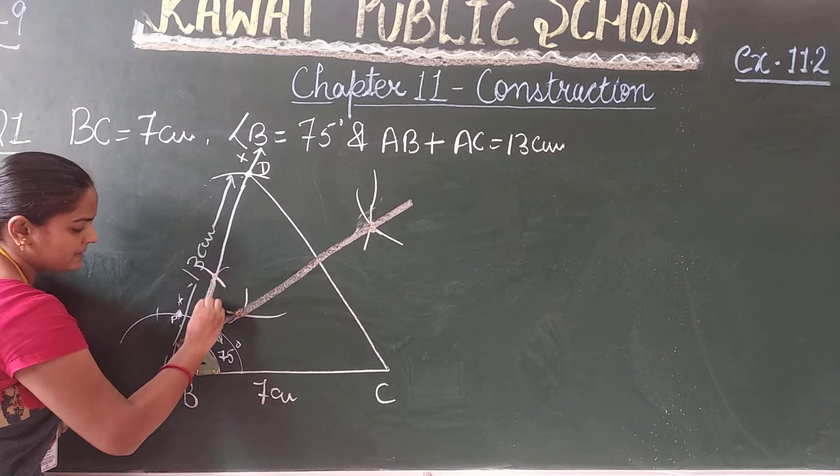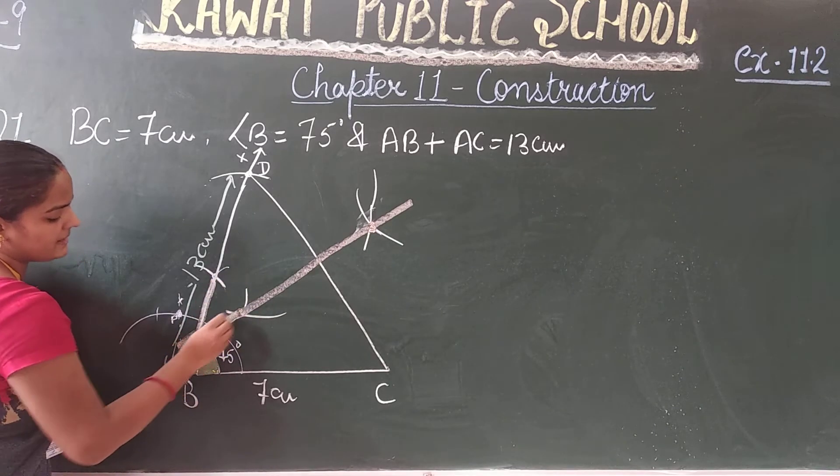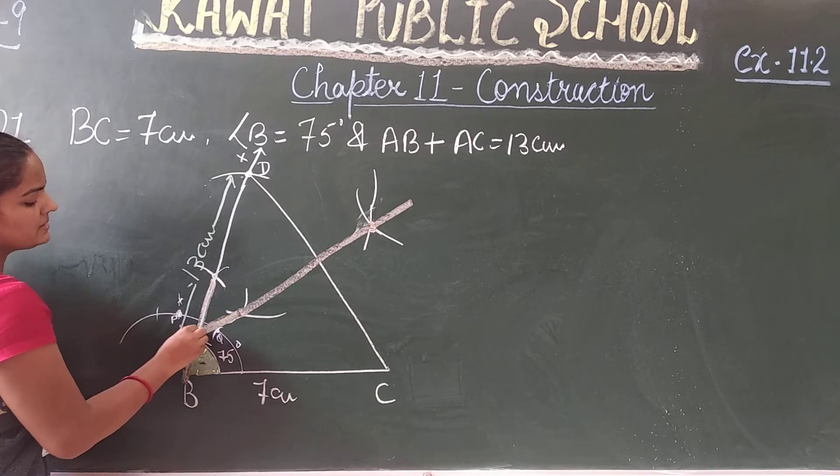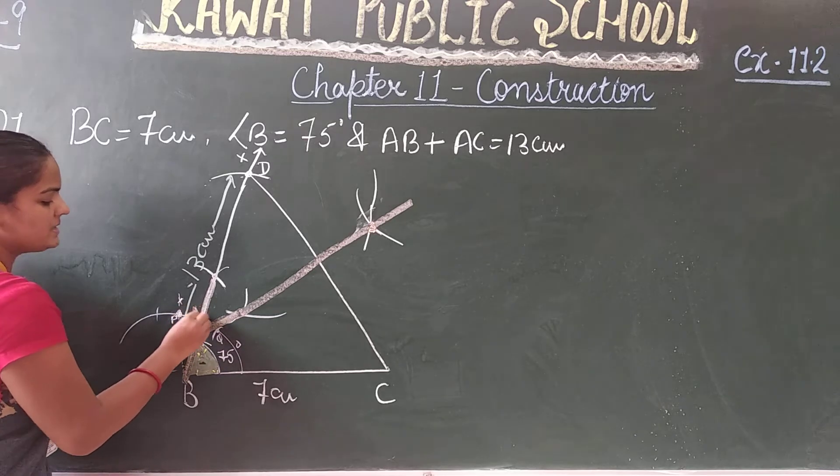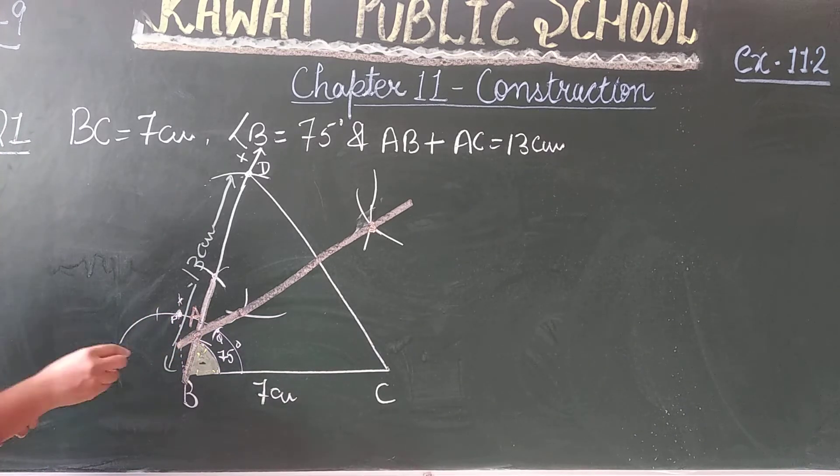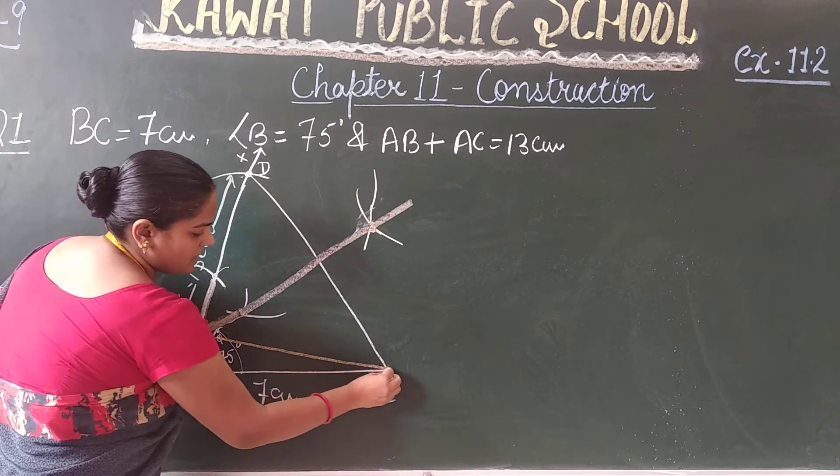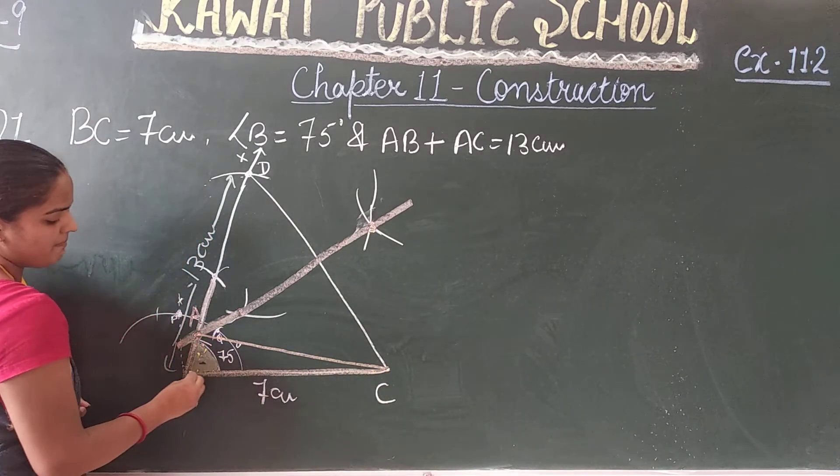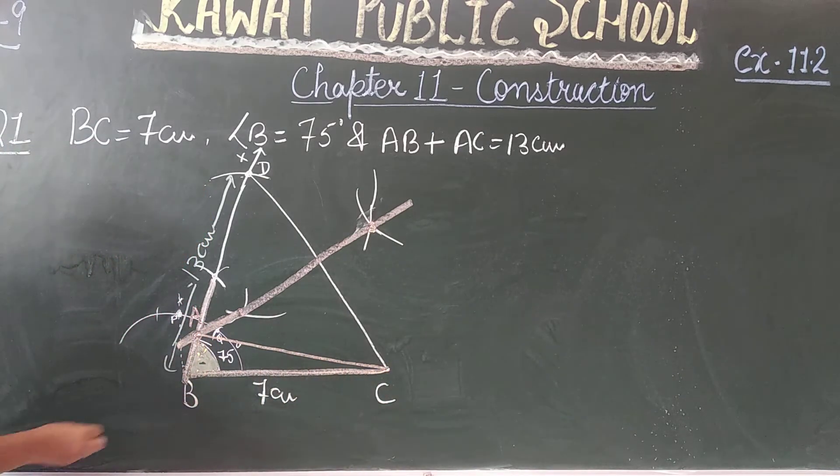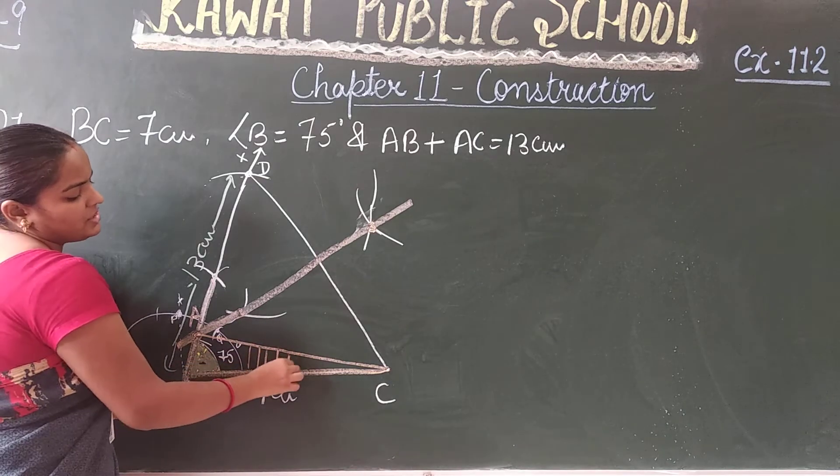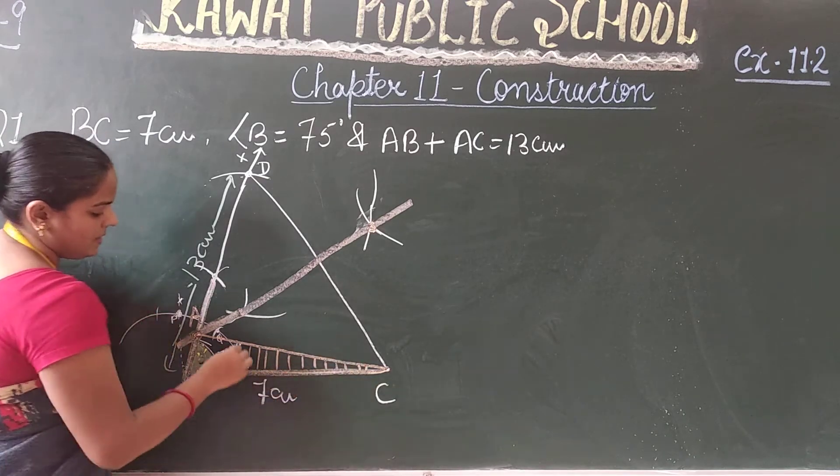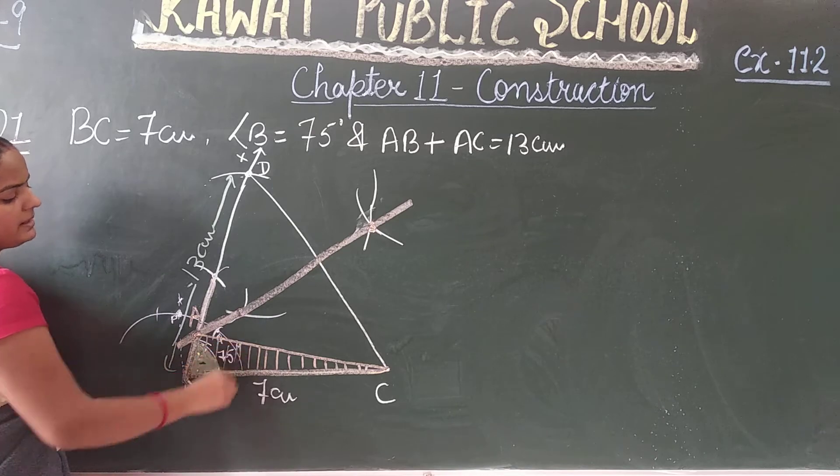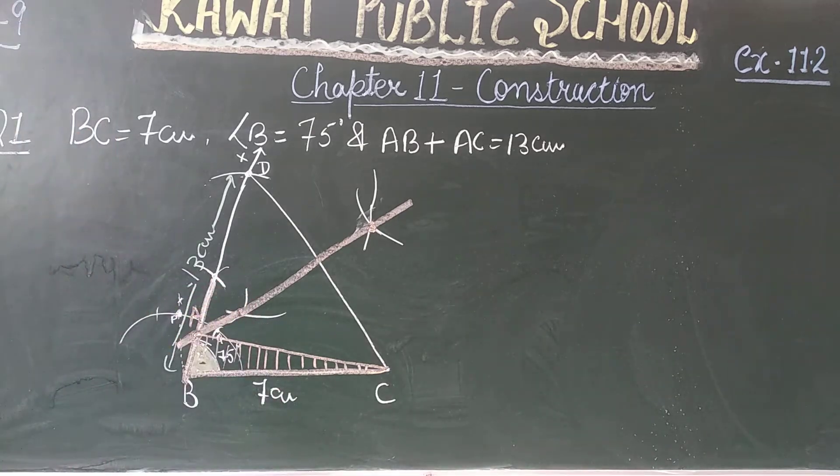This is point A. Now join AC. So this is the required triangle ABC. This is the required triangle ABC. So this is the first question.